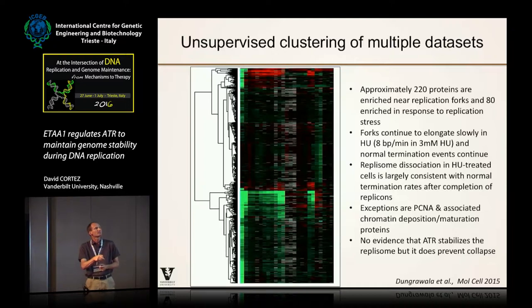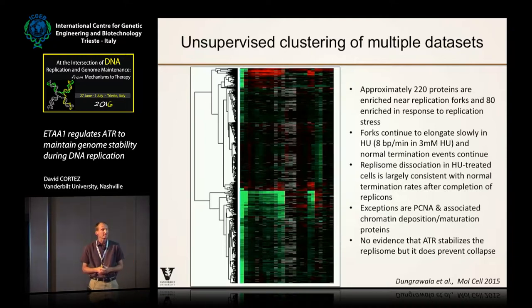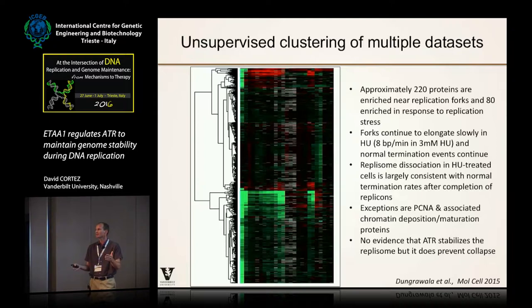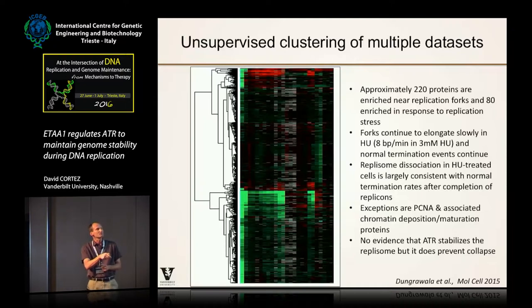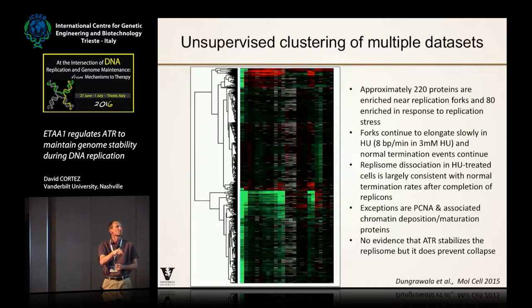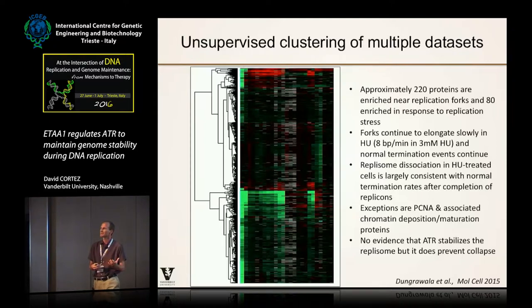An exception is PCNA and associated proteins, which undergo a biphasic loss from replication forks. The first phase is very quick, probably because of a change in equilibrium of the unloading and loading of PCNA at forks. Similar to what Karim Labib's lab showed in yeast, we didn't see any evidence that ATR kinase activity is required to stabilize the replisome itself, although it is required to stabilize the fork. We see abundance of double-strand break repair proteins and excess single-stranded DNA when ATR is inhibited.